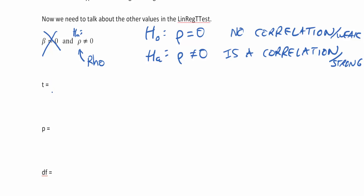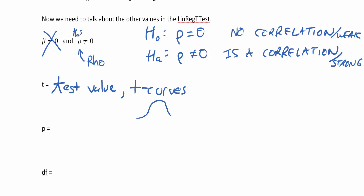The T value is also known as the test value. We would look at that on a T curve — or a series of T curves. A T curve is like a normal curve but adjusted for the sample size. Think of this in terms of standard deviations from 0. The test value tells you how many standard deviations away from 0 on a T curve this is.